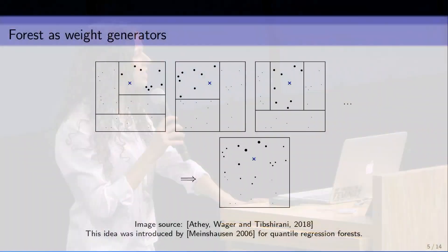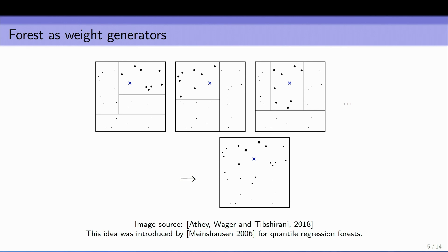The goal of this work is to improve both methods by leveraging the strengths of the other. We do this by thinking about random forests not as average-of-trees methods, but as generators of local neighborhoods. On the top row are three trees from a forest, where lines represent recursive partitions of the data and the blue cross is a test point. Instead of averaging points in each leaf, we use trees to tell us how close we are to our neighbors — if we're in the same leaf a lot, we share information. This generates a data-adaptive kernel.